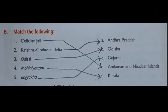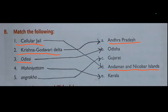Now let's see Exercise B: Match the Following. First, Cellular Jail — I told you about Cellular Jail, where our freedom fighters were kept by the British. It was also known as 'Kala Paani ki saza' because of the black water of that sea. Cellular Jail is located in the Andaman and Nicobar Islands. Then Krishna-Godavari delta is in Andhra Pradesh. Odissi dance is the classical dance form of Odisha. Mohiniattam is the classical dance form of Kerala, and Angarkha is worn in Gujarat — it is Gujarat's traditional dress.